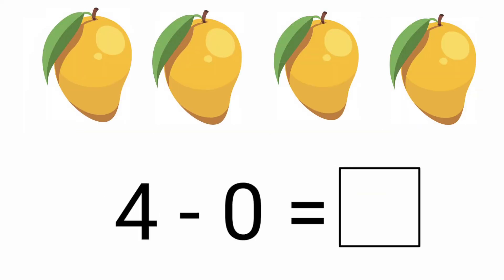Look at the next picture. How many mangoes are there? There are 4 mangoes. The given question is 4 minus 0. Here we don't need to subtract anything. The answer is 4 minus 0 equals 4. When we subtract 0 with any number, it remains the same. So the answer is 4. Let's write it in the given box.